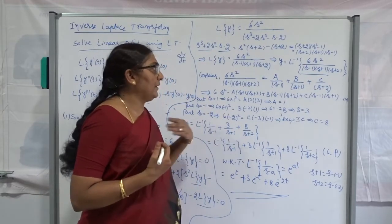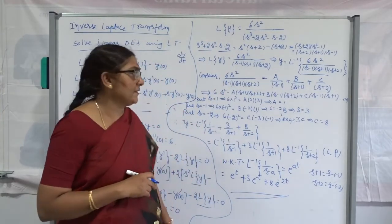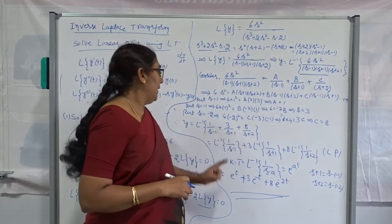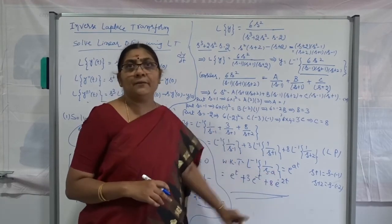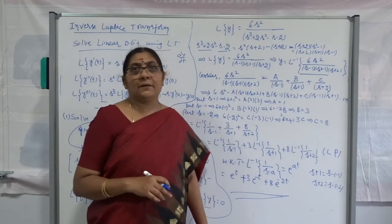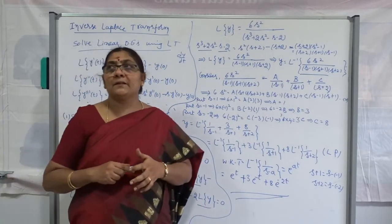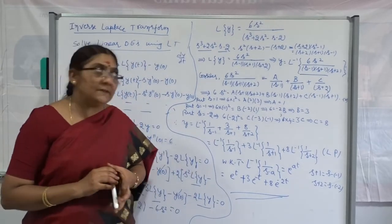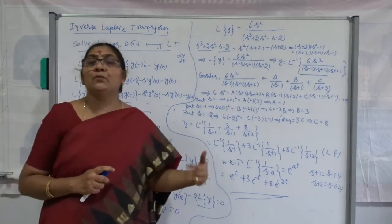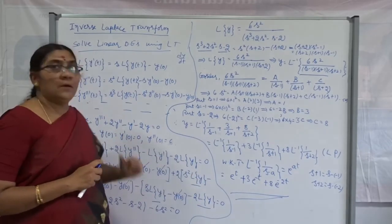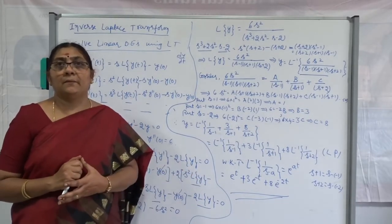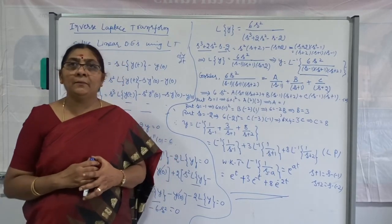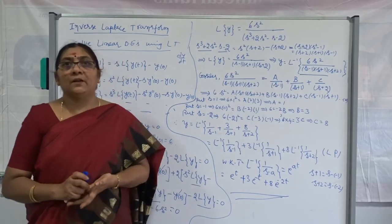Here we had a product of 3 linear non-repeated factors, so partial fractions were the best choice because everyone is comfortable with it, even though it is a little bit lengthy. After converting, each term becomes a standard form, and then the inverse Laplace transform is immediate. This is the way to solve a linear differential equation using Laplace transform. Note: you cannot find the general solution — only the particular solution is possible, and you must solve with boundary conditions. Thank you very much. If you found my video helpful, please like and subscribe to my channel.